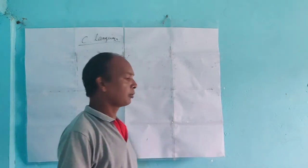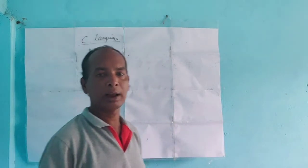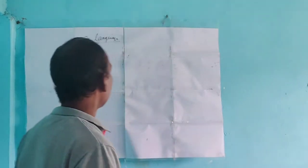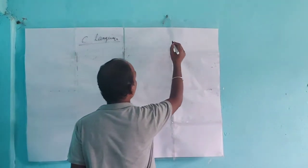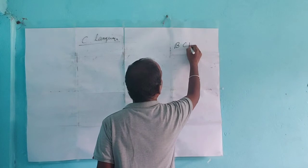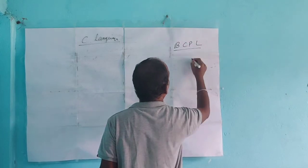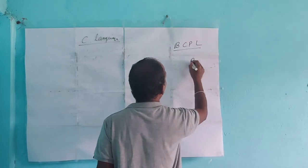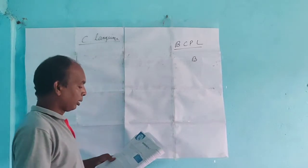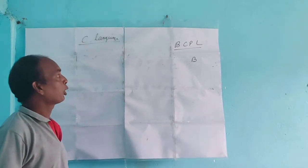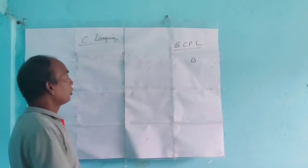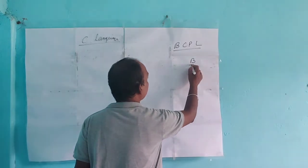Before C, it was known as BCPL — Basic Combined Programming Language — which is also called B language.